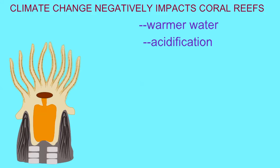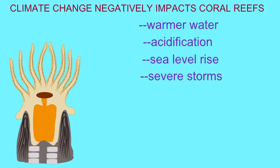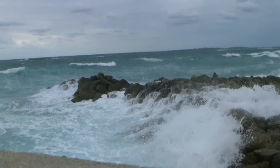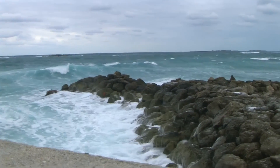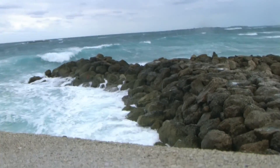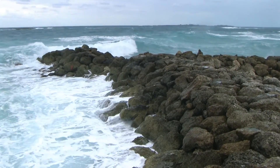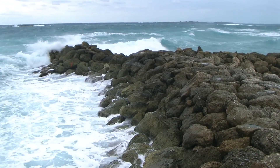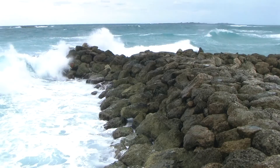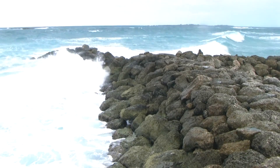Climate change can have other detrimental effects on corals as well, such as increasing sea level, which affects the amount of light which reaches the depth at which the corals are growing. Also, the frequency of severe storms increases, which can damage corals.